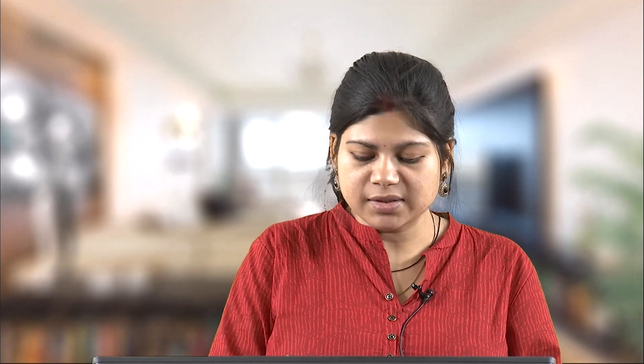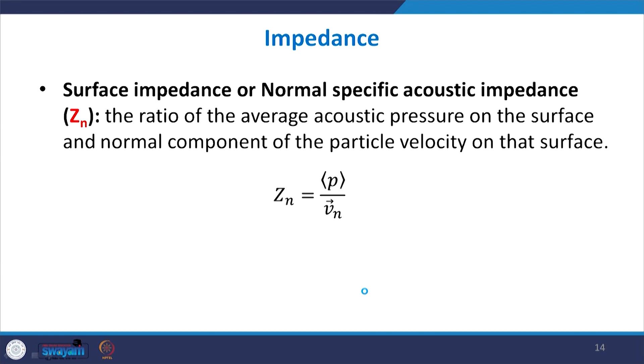Impedance can be a complex term: the real part is called acoustic resistance and the imaginary part is called acoustic reactance. There are two commonly used impedance types in acoustics. The first is surface impedance or normal specific acoustic impedance, denoted zₙ, defined as the ratio of the average acoustic pressure on the surface to the normal component of the particle velocity on the surface.